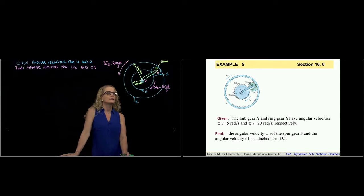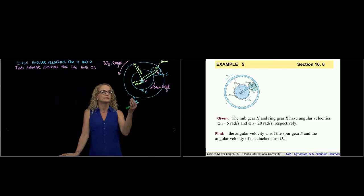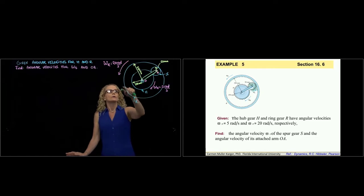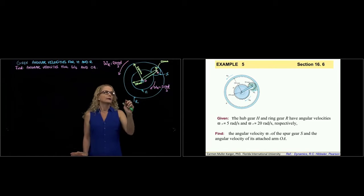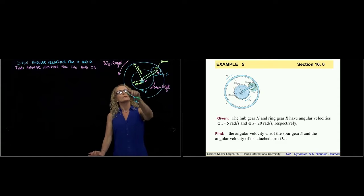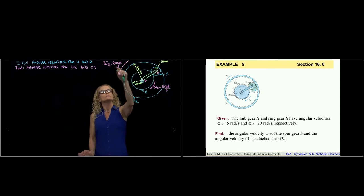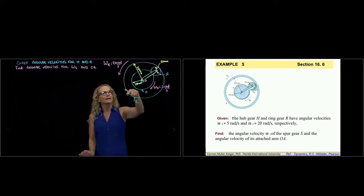Here we have a system of gears — a planetary system of gears. We have three gears. There is an outer gear, which you can see better in the slide, and we know its angular velocity, which is 20 radians per second.